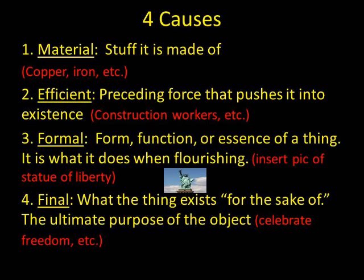The four causes can also help us discover the difference between a thing's essential and accidental properties. The accidental properties of a thing are those it could lose and still be that thing. For example, you could grow taller and heavier and still be you, so height and weight are not essential to your identity. You could also be tanner than you currently are, so color is not an essential property.